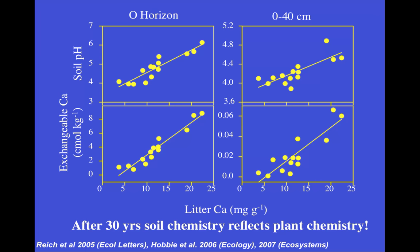What you can see in all four panels is a very strong relationship between the chemistry of the litter going in and the chemistry of the soil. Things that have very high litter chemistry lead to high levels of that particular element in the soils underneath them.